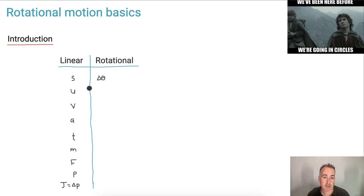So U, which is the initial speed, well, we're going to call that omega I, which is going to be the initial angular velocity. And where V was the final speed or final velocity, this is going to be omega F, the final angular velocity.